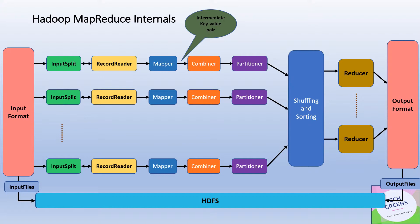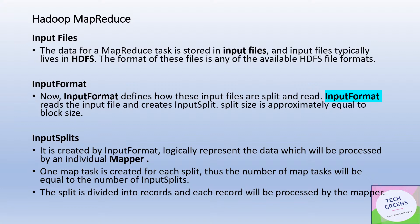It all starts with how input files are read from HDFS. Input files are the data for a MapReduce task, stored in files typically in HDFS — the Hadoop Distributed File System. The format of these files could be any of the available HDFS file formats such as Parquet, Avro, or any other supported format. Input Formats define how the data type could be defined in the Hadoop MapReduce world and specify how the input files would be split and read. Input Format's responsibility is to create input splits. The size of an input split is more or less equal to the size of a block in HDFS.